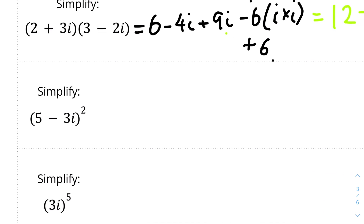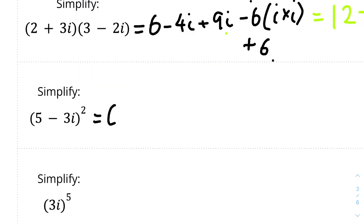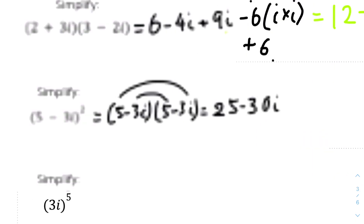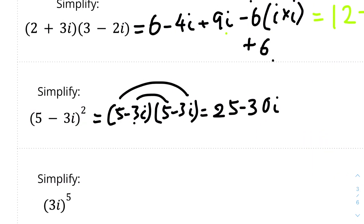The second example: simplify (5 − 3i)(5 − 3i). The first term is 5 times 5, which is 25. The second and third terms are both minus 3 times 5, which is minus 15. Because we have two of those, it becomes minus 30i.